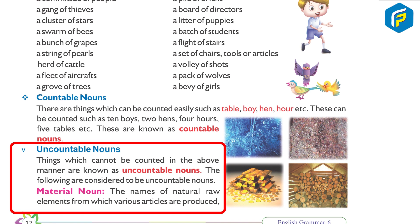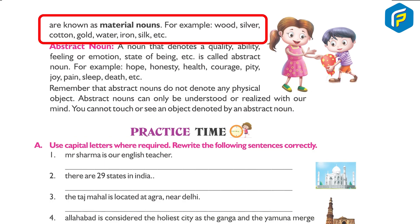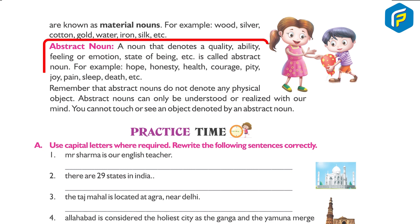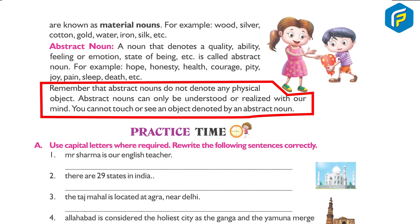Material noun: the names of natural raw elements from which various articles are produced are known as material nouns. For example: wood, silver, cotton, gold, water, iron, silk, etc. Abstract noun: a noun that denotes a quality, ability, feeling or emotion, state of being, etc. is called an abstract noun. For example: hope, honesty, health, courage, pity, joy, pain, sleep, death, etc. Remember that abstract nouns do not denote any physical object; they can only be understood or realized with our mind — you cannot touch or see an object denoted by an abstract noun.